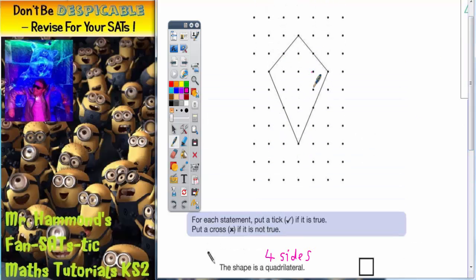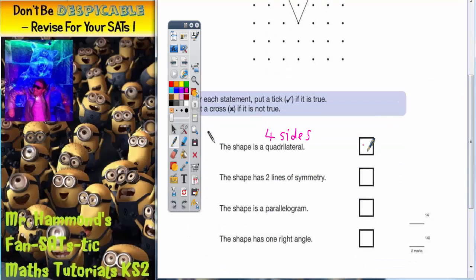Well, we've got one side, two sides, three sides, four sides. Yes it does, so that statement is an easy one. We can just tick it.